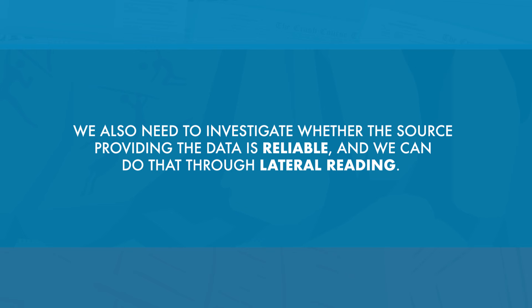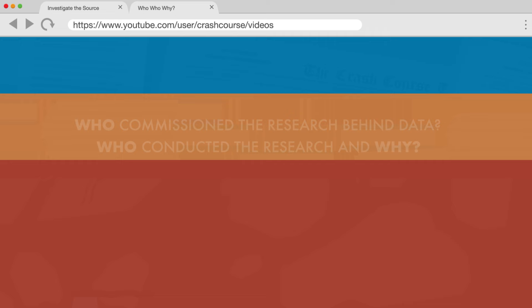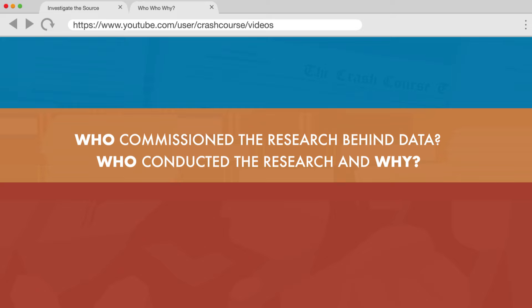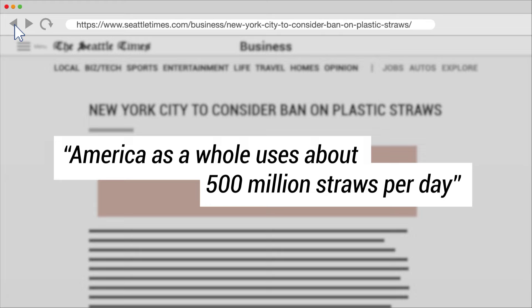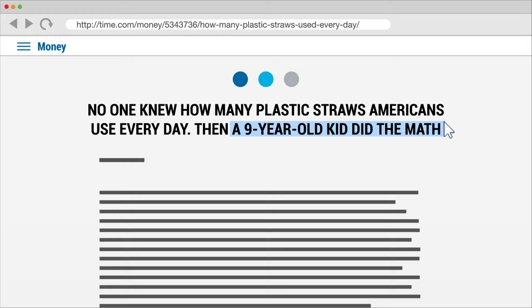We also need to investigate whether the source providing the data is reliable, and we can do that through lateral reading — opening new tabs to learn more from other sources about who commissioned the research, who conducted it, and why. We also need to know if the source is authoritative, or in a good position to gather that data in the first place. Remember the claim that Americans use 500 million straws per day? We couldn't confirm the actual number, but sources across the web cited that statistic, even though it came from a 2011 report written by a then 9-year-old child, Milo Kress. He called up straw manufacturers to ask how many straws they made, but there's no way of knowing if those manufacturers were telling the truth.